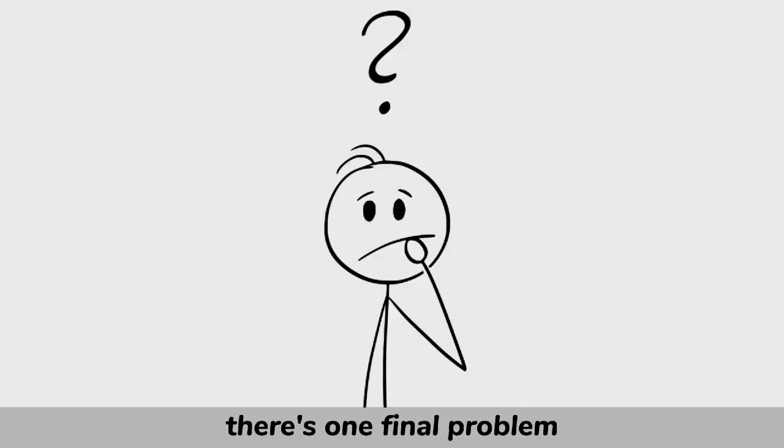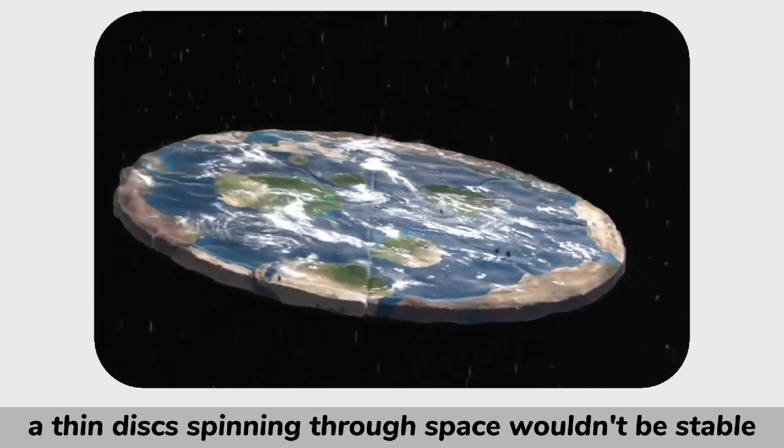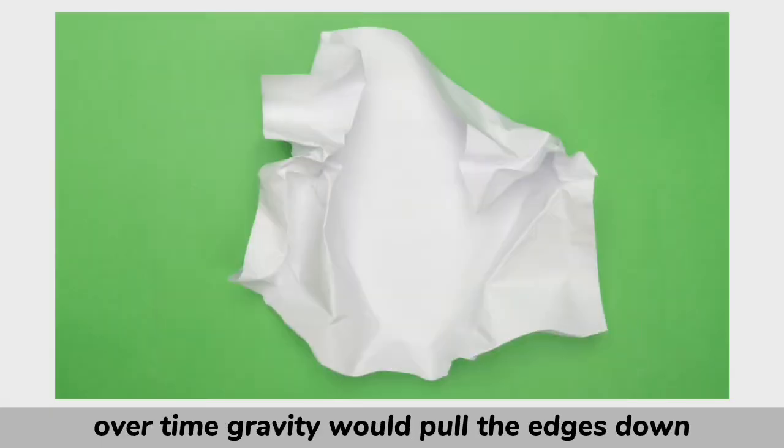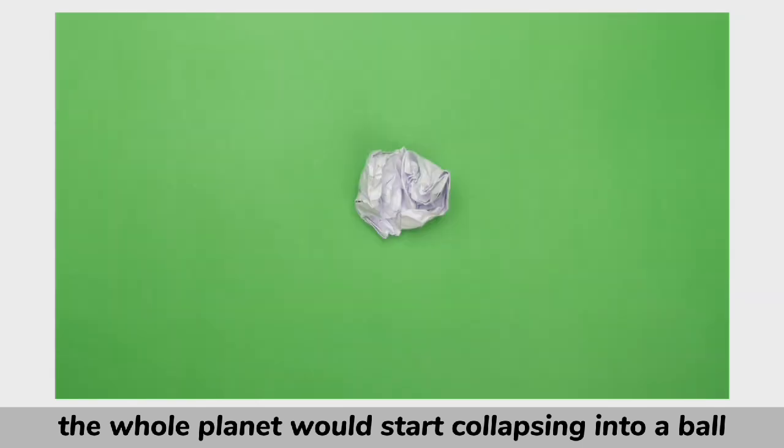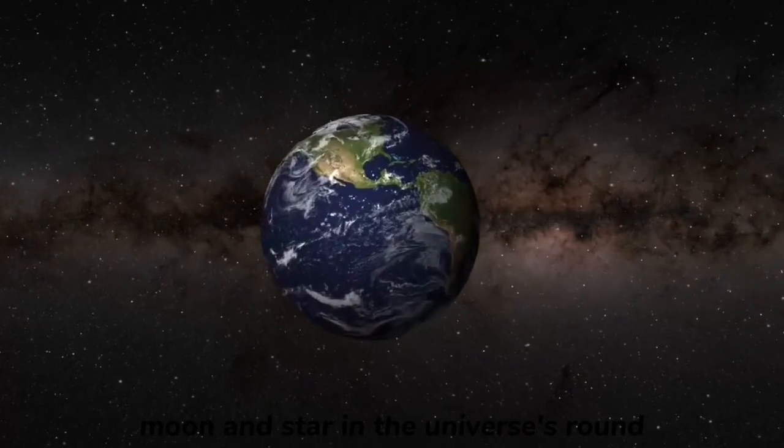Even if all of this somehow worked, there's one final problem. A thin disk spinning through space wouldn't be stable. Over time, gravity would pull the edges down and the whole planet would start collapsing into a ball. That's why every large planet, moon, and star in the universe is round. Gravity won't let them be any other shape.